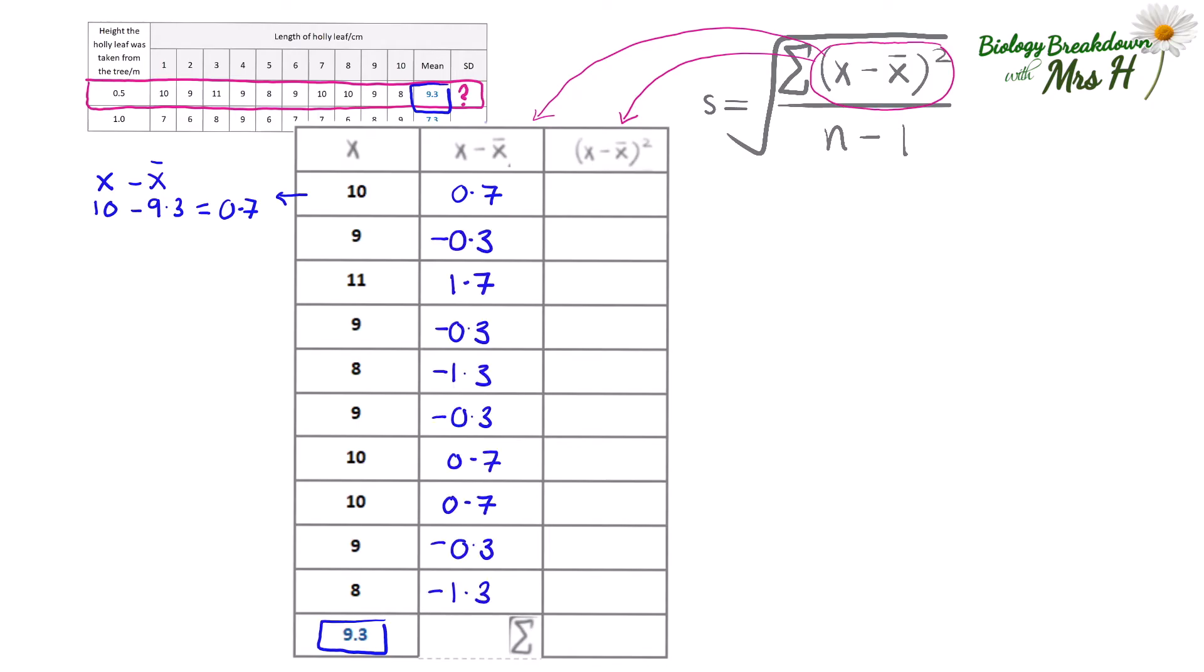Then square the value so 0.7 times 0.7 equals 0.49 and so on and so on. Once you've completed that column you can find the sum and then substitute the values into the formula.